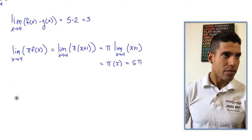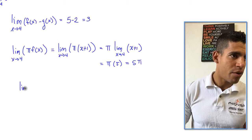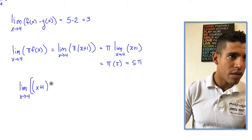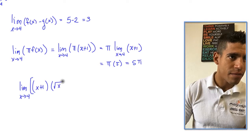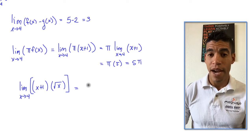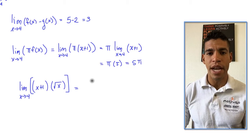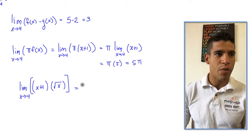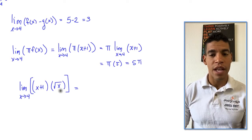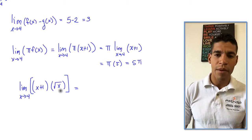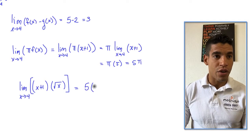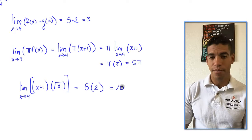Multiplication: the limit as x approaches 4 of (x + 1) times √x. By the product theorem, this equals the limit of (x + 1) times the limit of √x as x approaches 4. The limit of x + 1 is 5, and the limit of √x is 2, so the value is 10.